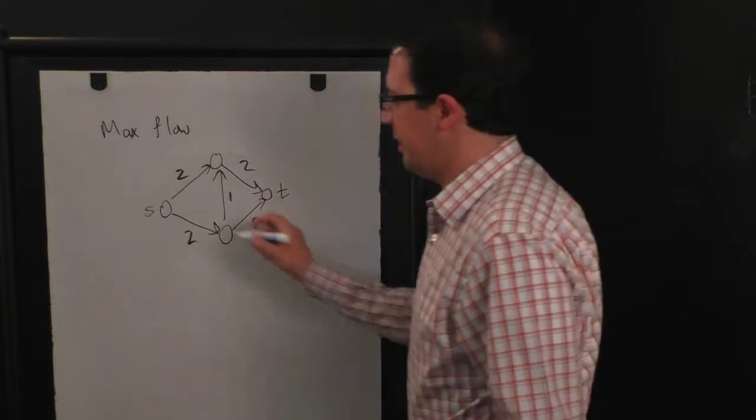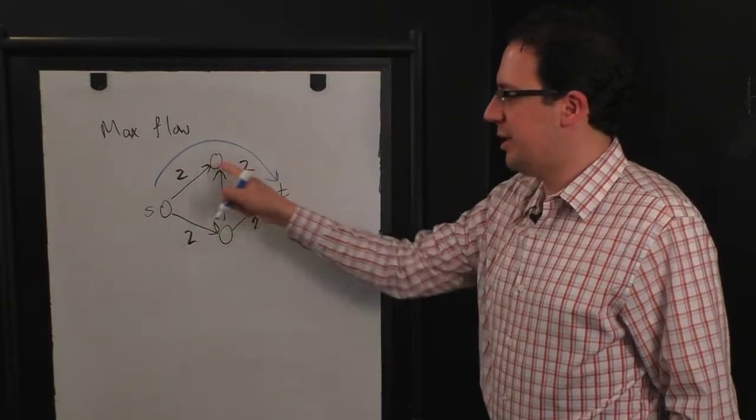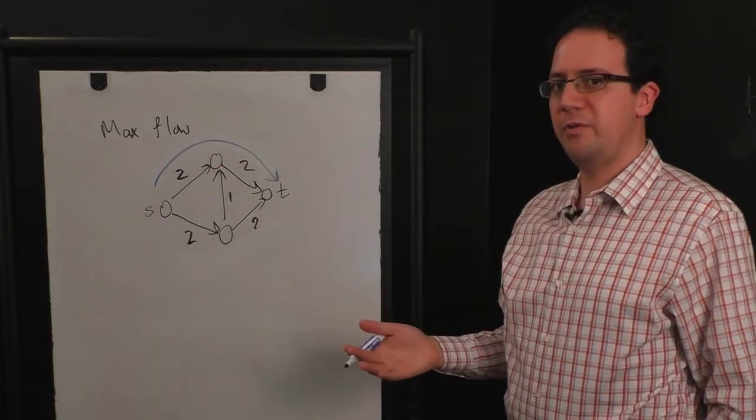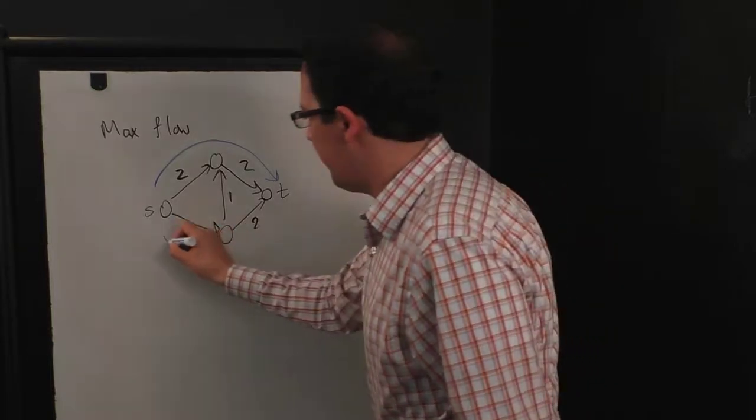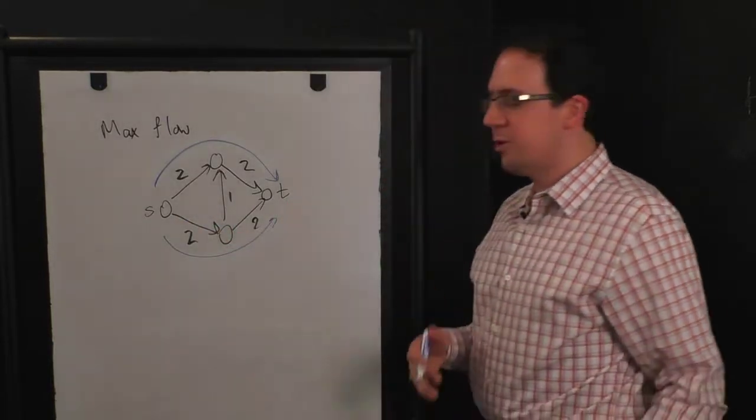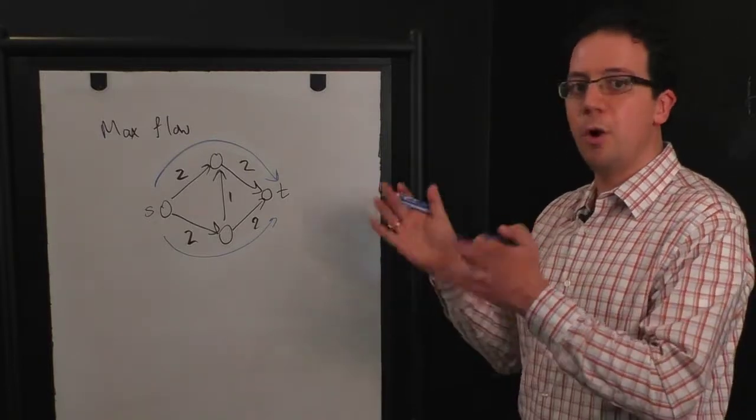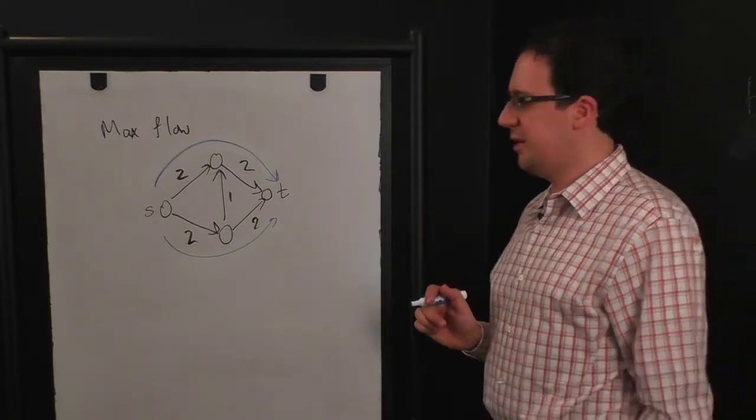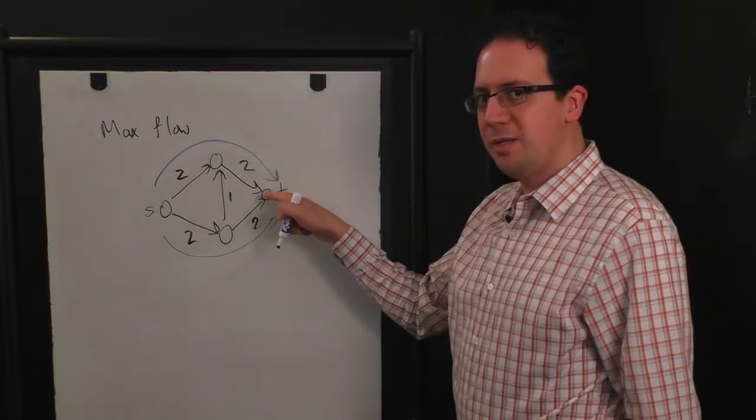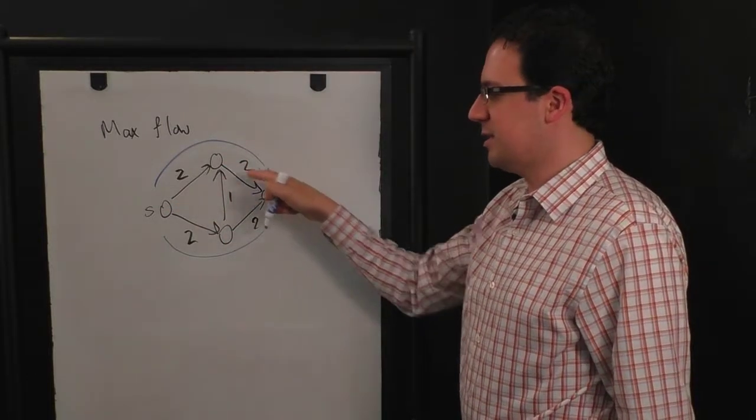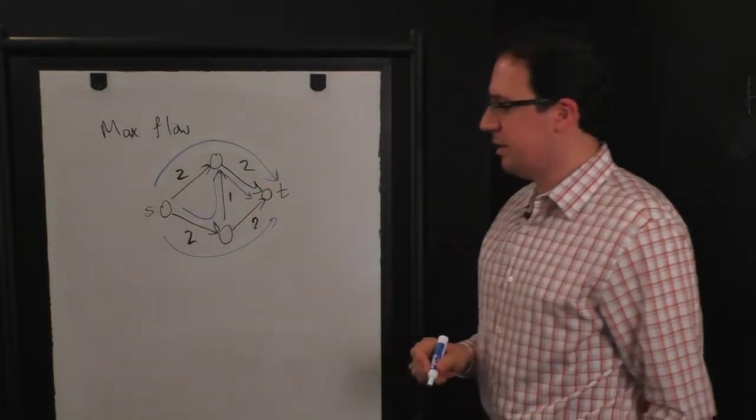So for example, we might start by putting one unit of flow there. So these two edges now have one unit of excess capacity that we haven't used yet. And we might put a flow here. And we're doing this greedily, so we have to pretend like we don't know what the answer is. We just have to look arbitrarily for paths that have excess flow. Notice that this path now has excess capacity of one. So maybe in our next step, we put a unit of flow along this path.